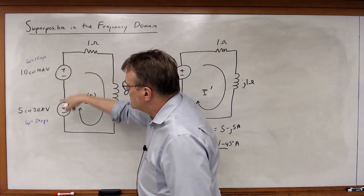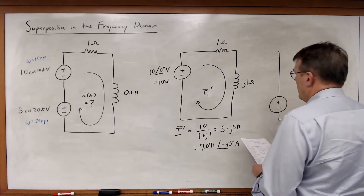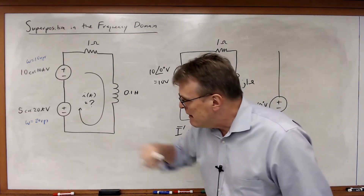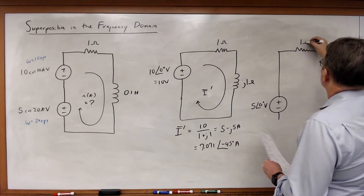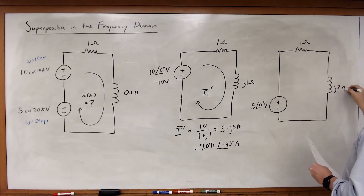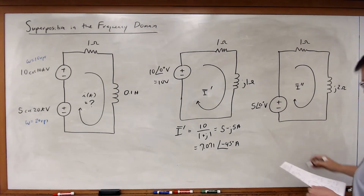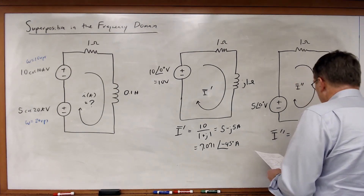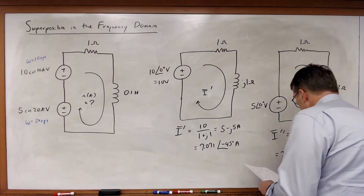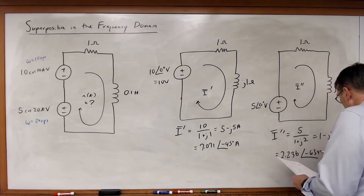Now I zero out the top source and examine the current due to the bottom source. This is 5 at a phase angle of zero volts, but now omega equals 20 radians per second. The 1 ohm resistance doesn't change, but the impedance of the inductor is now J2 ohms. So I double prime equals 5 over (1 plus J2), which equals 1 minus J2 amps, or 2.236 at a phase angle of minus 63.43 degrees amps.